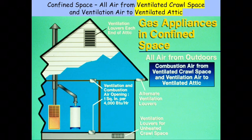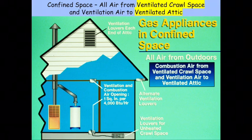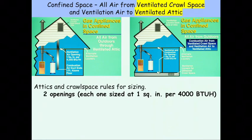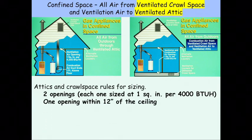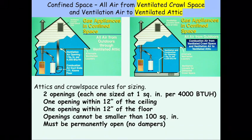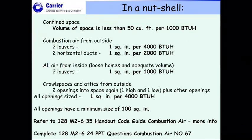In the crawl space application, ventilation air is drawn from a louvered unheated crawl space up into the mechanical room. The rules are essentially the same: each opening sized at one square inch per 4,000 BTUs, one opening high, one opening low — within a foot of the floor in this case — not less than 100 square inches, and no dampers.